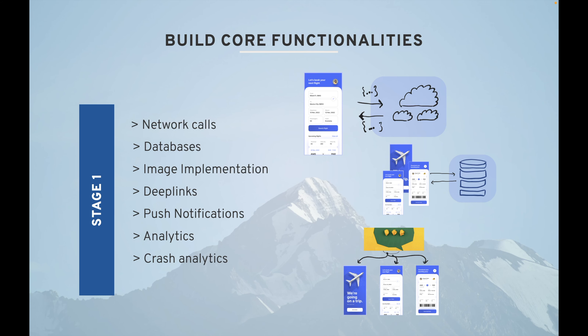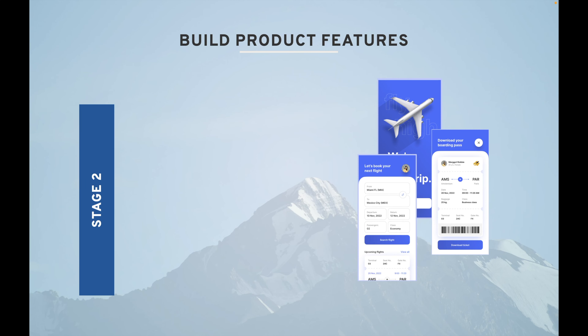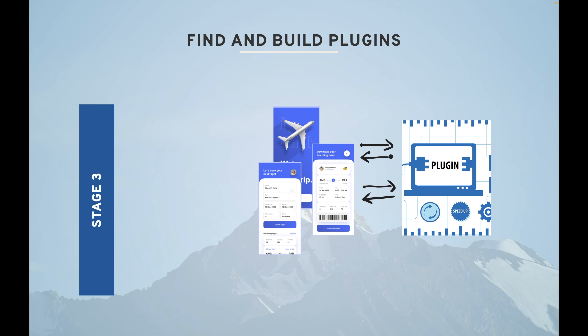Stage two is building product features. For example: login, home, stories, profile, payments, and booking. On the right side you can see an example of an airplane booking app. You can have login, home, stories, profile, payments, booking, and a lot of other features included in stage two.